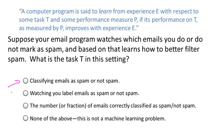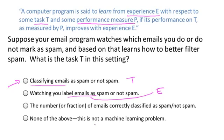Hopefully you got that classifying emails is the task T. This definition identifies a task T, a performance measure P, and an experience E. Watching you label emails as spam or not spam would be the experience E. The fraction of emails correctly classified might be our performance measure P. And so the system's performance on task T, as measured by P, will improve after the experience E.